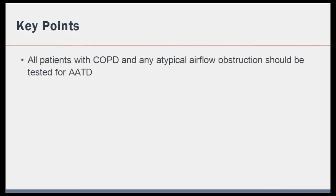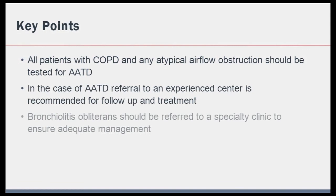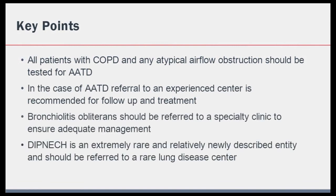The take-home points from this section on uncommon causes of airflow obstruction are: firstly, all patients with COPD should be tested for alpha-1 antitrypsin deficiency. Any patient with airflow obstruction that is atypical or difficult to classify should also be tested. Referral to specialty clinics should occur to ensure appropriate management. Bronchiolitis obliterans should be referred in a timely manner to specialty clinics. Finally, DIPNECH is an extremely rare and relatively newly described entity and should be referred to a rare lung disease clinic for appropriate follow-up.